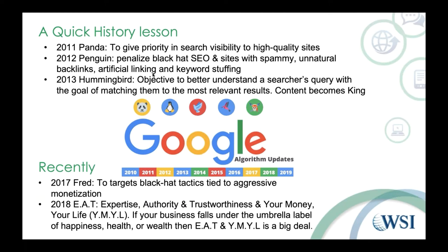Coming into this, I think we need to understand the past in order to really capitalize on the future. When it comes to Google and SEO, really from the beginning, Google's only ever wanted to do one thing: serve up the most relevant search results for somebody's query. In the early days we got a lot of searches that might not have been as relevant as we'd have liked. But today Google's really perfected its algorithm.